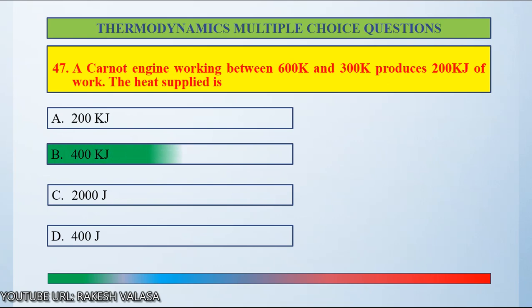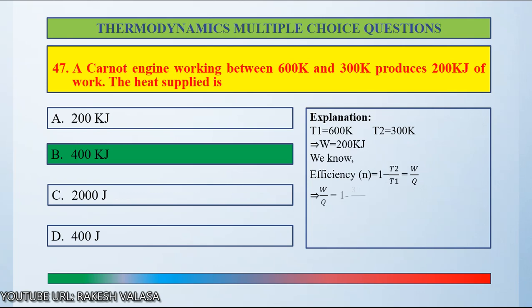The answer is 400 kJ. T1 equals 600 K, T2 equals 300 K, and the given work is 200 kJ. Using the efficiency formula for Carnot engine: efficiency equals 1 minus T2 by T1 equals work by heat supplied. So Q equals W divided by (1 minus T2 by T1) equals 200 divided by (1 minus 300 by 600) equals 200 divided by 0.5, giving Q equal to 400 kJ. So the answer is option B, 400 kJ.